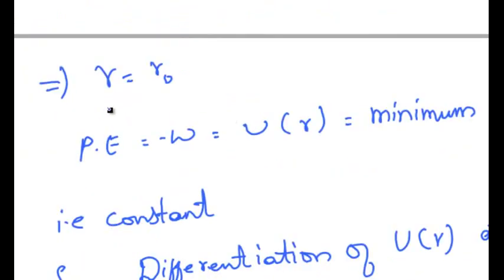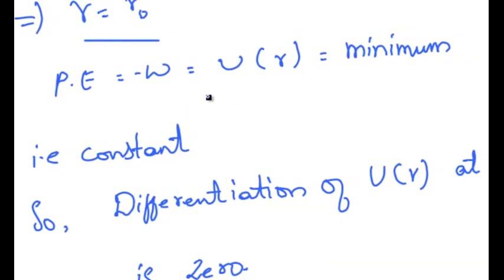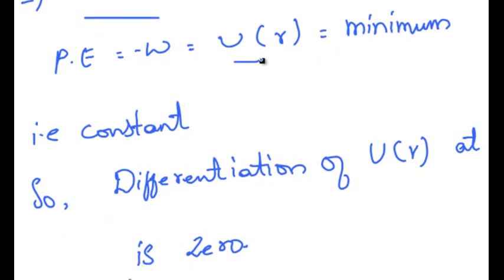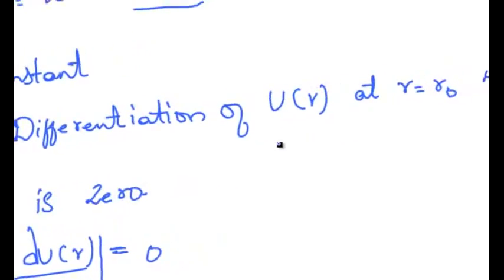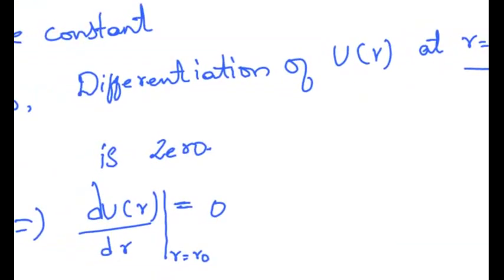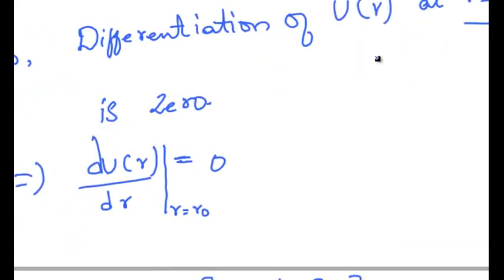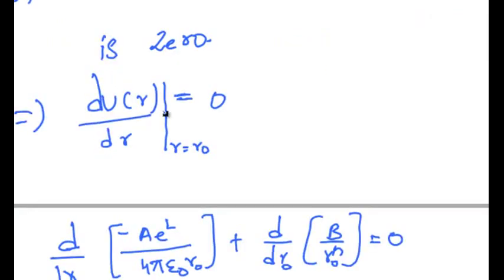At equilibrium separation, that is r is equal to r naught, potential energy is minimum and constant. Therefore, differentiation of u of r with respect to r at r equal to r naught is zero, since potential energy u of r is a constant at equilibrium.